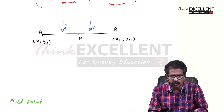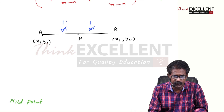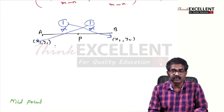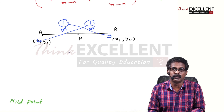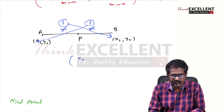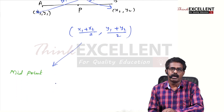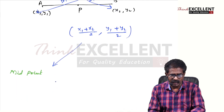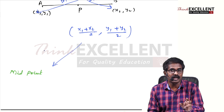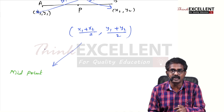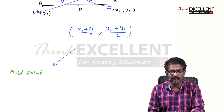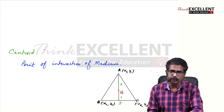So substituting 1 is to 1: 1 into X2 plus 1 into X1 divided by 1 plus 1, which is 2. So you get X1 plus X2 by 2, and Y1 plus Y2 by 2. This is the formula to find the midpoint. So three formulas I taught: one for internal division, one for external division, and one to find the midpoint.